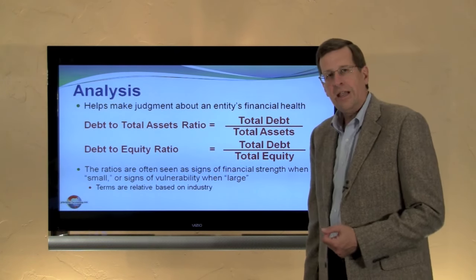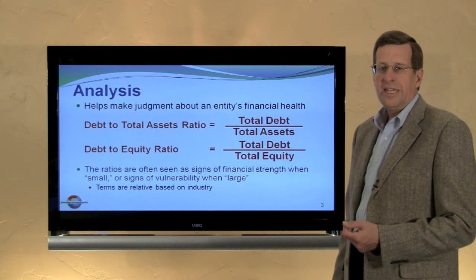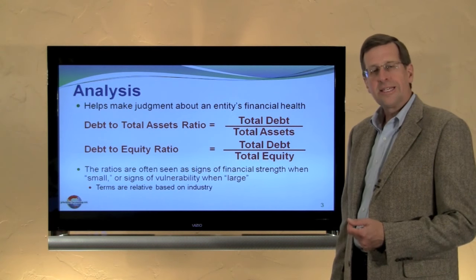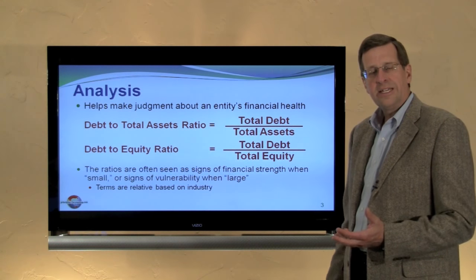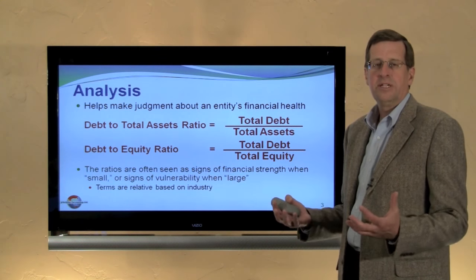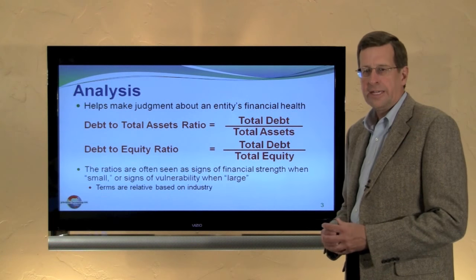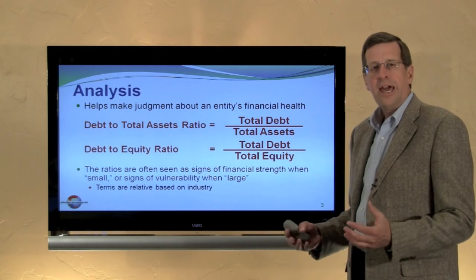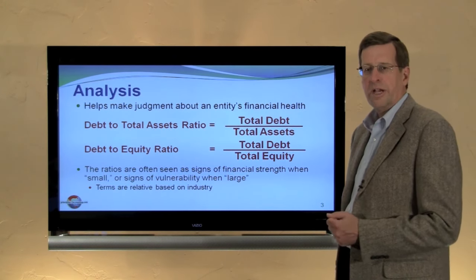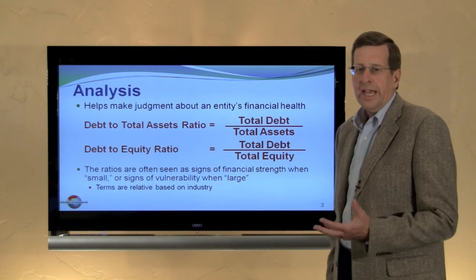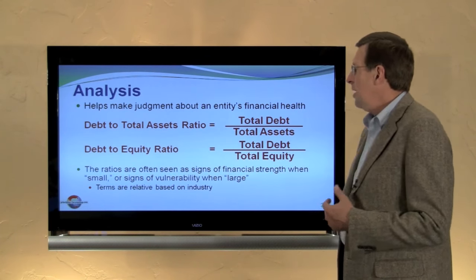Looking at analysis, there are two ratios to consider. One is debt to total assets, where total debt is simply divided by total assets. It shows what proportion of the company's total assets are represented by financing. A related ratio is debt to equity, where total debt is divided by total equity.